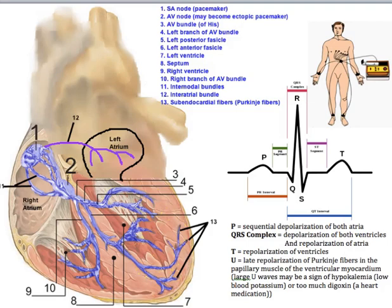If the SA node fails as a pacemaker, the AV node or even the Purkinje fibers may act as the initiator of the action potential. This is abnormal and is called an ectopic pacemaker. However, their rate of discharge is generally much slower than that of the SA node, and the rate may go down to 40 to 60 beats per minute.